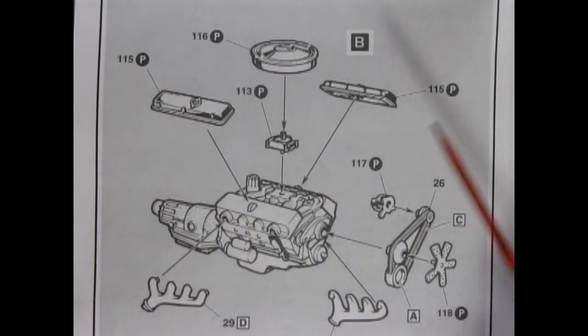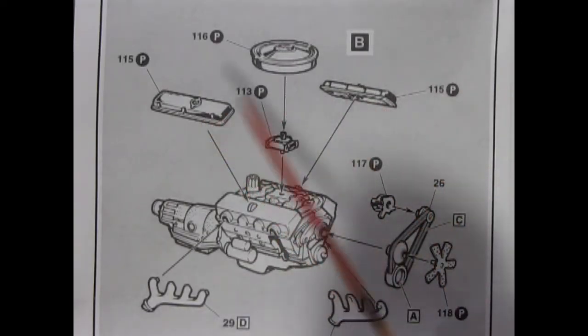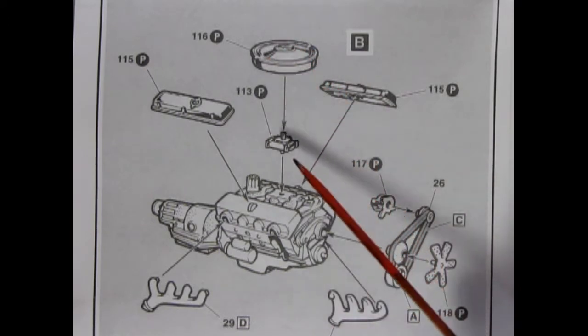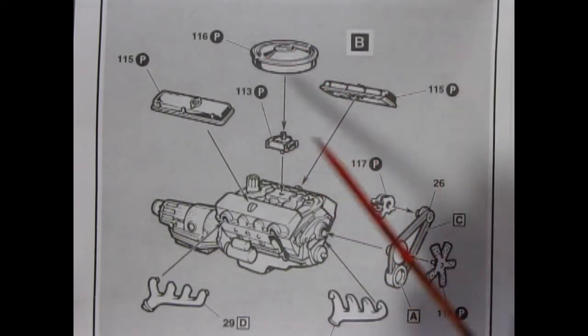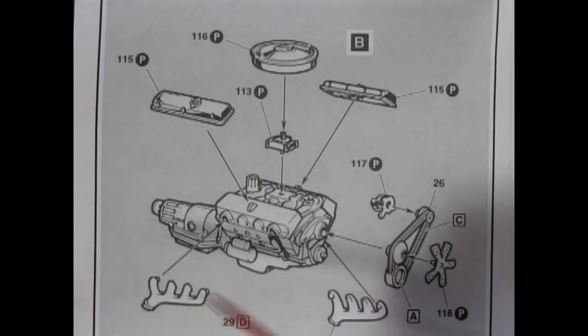Panel one B shows our completion of our engine with the chrome valve covers and chrome air cleaner being glued down onto the four barrel carburetor, as well as our exhaust manifolds, our pulley, fan, and alternator.